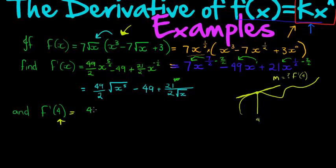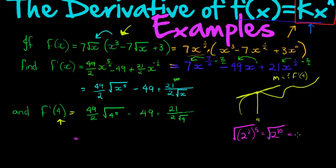So let's see what it is. If I substitute 4 in here, I get 49 over 2 times 4 to the power of 5 minus 49 plus 21 over 2 times the square root of 4. Let's see if I can do this without a calculator. This 4 to the power of 5 is the same as saying 4 to the power of 4 times 4 to the power of 1. Or I can just say, well, 4 is 2 squared. So 2 squared to the power of 5 is equal to 2 to the power of 10. And the square root of 2 to the power of 10 is 2 to the power of 5, which is half the exponent. So this is 49 times 2 to the power of 5 divided by 2 minus 49 plus 21 over 2 times the square root of 4 is 2. So that's 21 over 4.